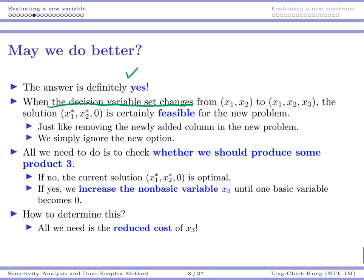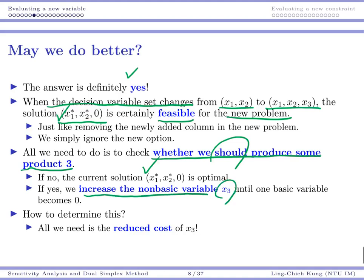When our decision variable set changes from (x1, x2) to (x1, x2, x3), our optimal solution for the previous problem is certainly feasible for our new problem because we simply just don't produce anything for product 3 as our initial solution. So it makes sense to start from this initial solution and check whether it is optimal to produce some units of product 3. If we shouldn't, this is actually optimal. Otherwise, we are just increasing the non-basic variable x3 until one basic variable becomes zero.